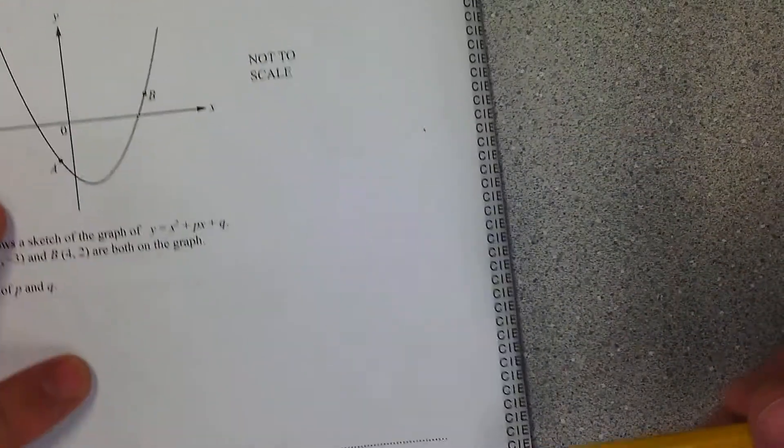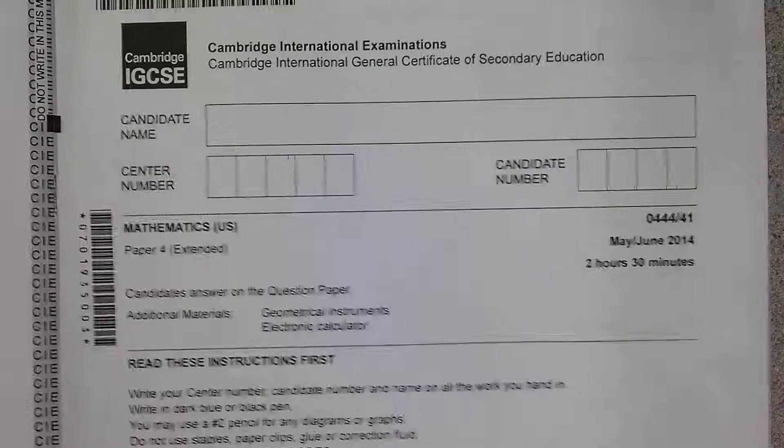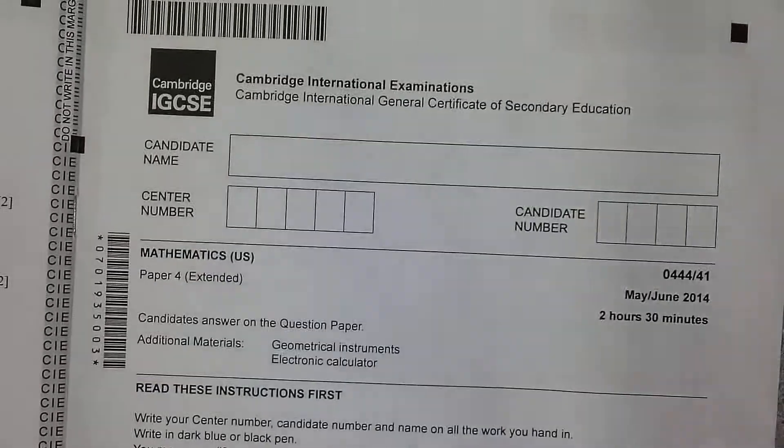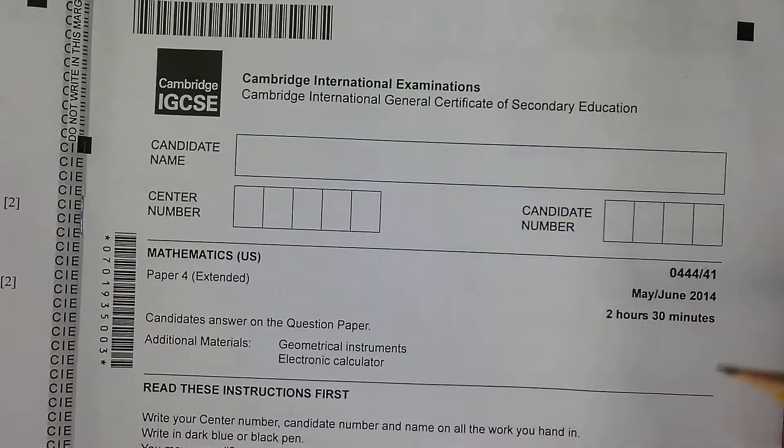This problem is worth eight points. Eight points is a ton. That is often the difference between somebody being successful and unsuccessful. So this is our last problem for paper four. If you're an IGCSE, Cambridge math student...